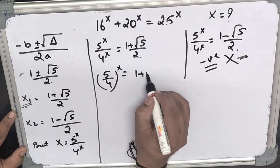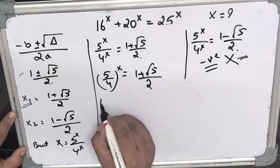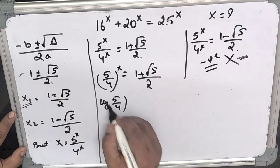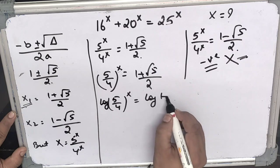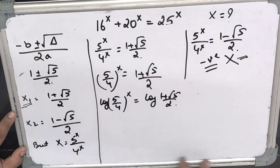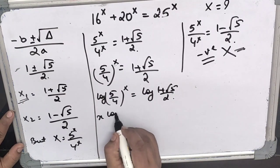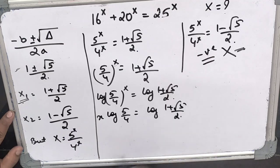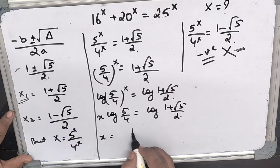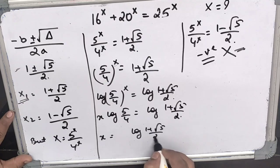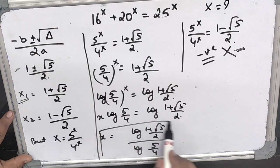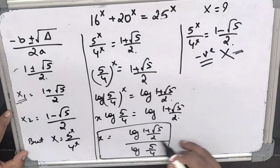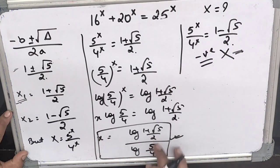So we take (5/4)^x equals (1 + √5)/2, and apply log to both sides. This gives x times log(5/4) equals log((1 + √5)/2). Therefore, x equals log((1 + √5)/2) divided by log(5/4). That is the value of x for this equation.